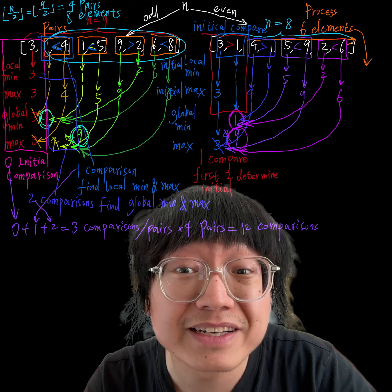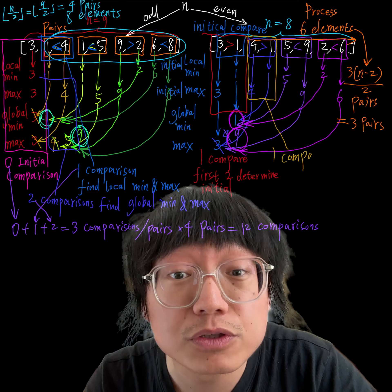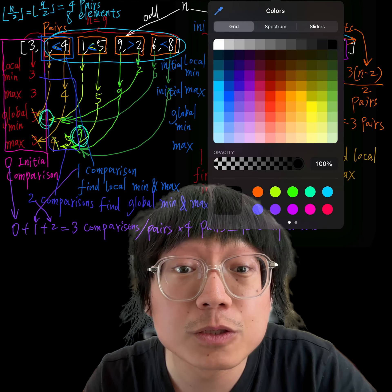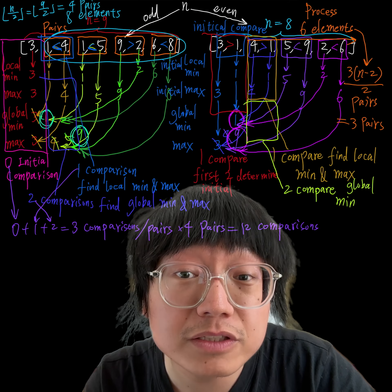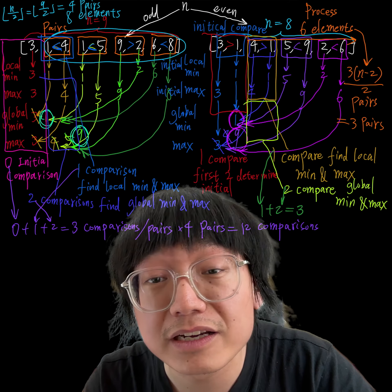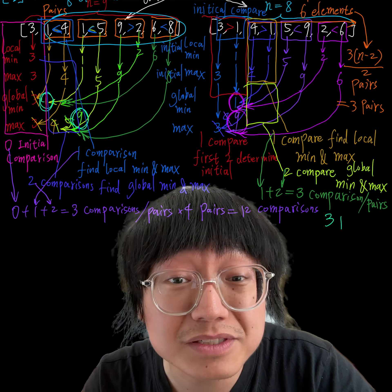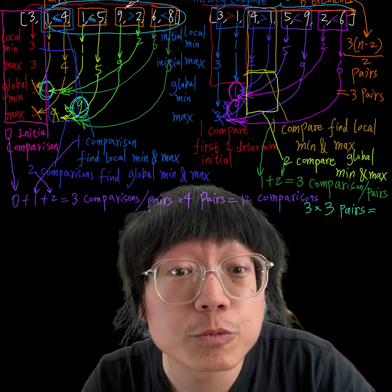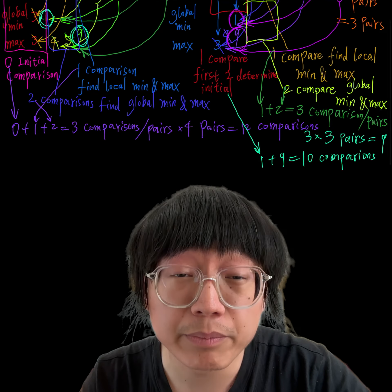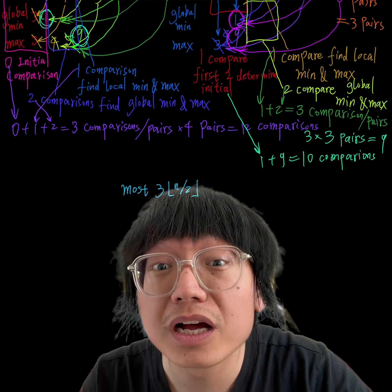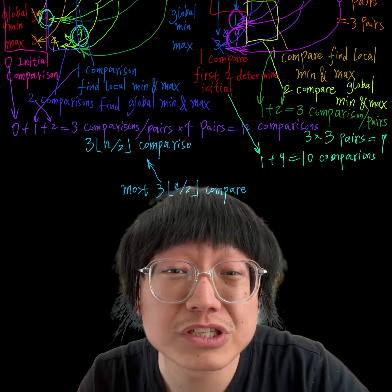When n is 8 (even), the initial setup compares the first two elements to determine the initial minimum and maximum, which is 1 comparison. We then process the 6 remaining elements in pairs starting from the third element: (8-2)/2 = 3 pairs. Each pair has 3 comparisons (1 within-pair plus 2 against global min/max), giving 3 times 3 = 9 comparisons for the pairs. The total is 1 plus 9 equals 10 comparisons.